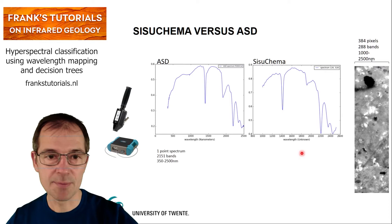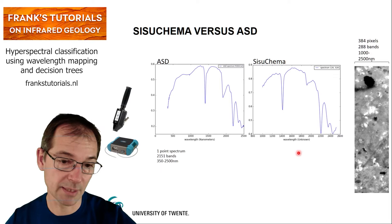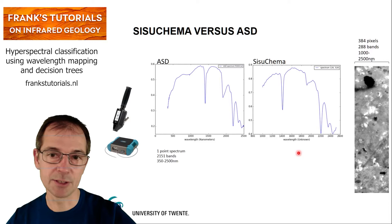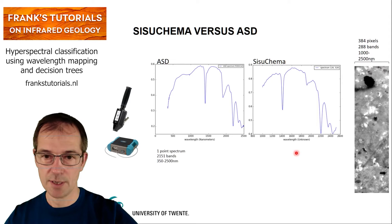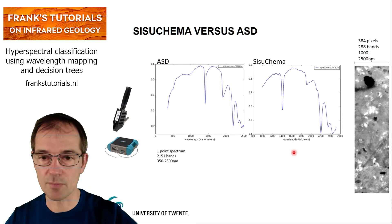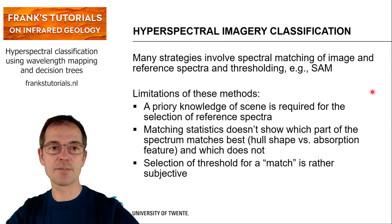We can also compare it to an ASD. The ASD has many more bands but only one-point measurement. The SISU-KEMA image spectrum is not as detailed as the one measured with the ASD and is slightly noisier. This gives you some reference context for placing the SISU-KEMA system.